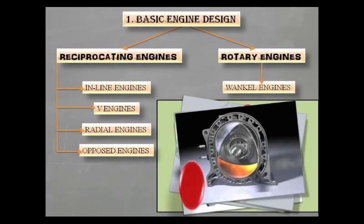Wankel engine is a type of rotary engine. The main advantage of using this type of engine is that it is generally 30% lighter and produces twice as much power compared to reciprocating engine. But unfortunately, it gives poor fuel economy and have high emissions and unburnt hydrocarbons.